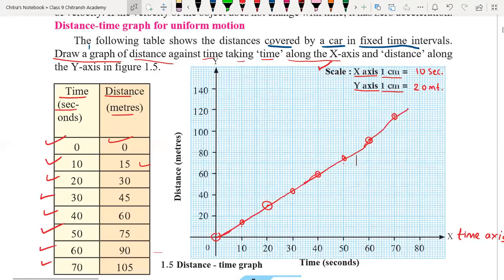This straight line represents what? That straight line represents the uniform motion.